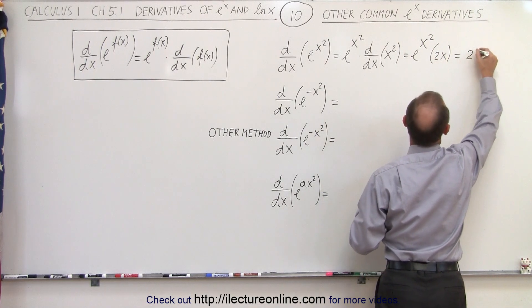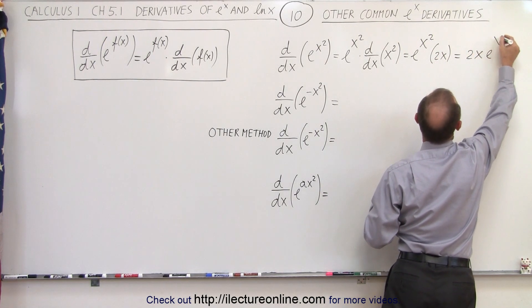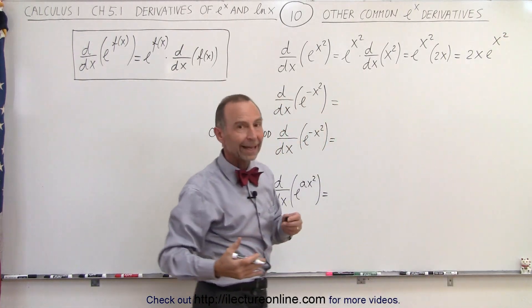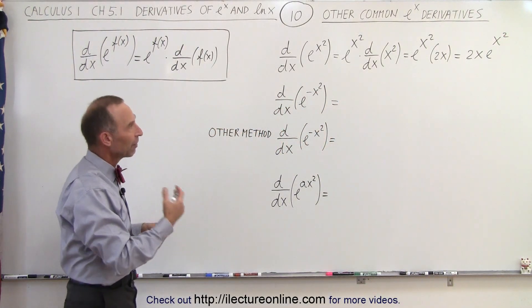So this becomes equal to e to the x squared times 2x. And so this becomes 2x e to the x squared. So simply repeat the function and then multiply that times the derivative of the exponent.